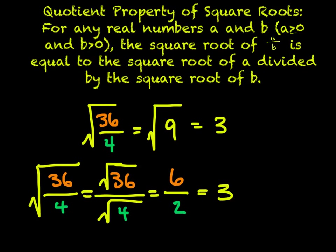Again, mumbo jumbo — but here's an example. We have the square root of 36 divided by 4. We can do 36 divided by 4 equals 9, so the square root of 9, which is 3. Or we can break it up: the square root of 36 divided by the square root of 4. The square root of 36 is 6, the square root of 4 is 2, and 6 divided by 2 is 3.